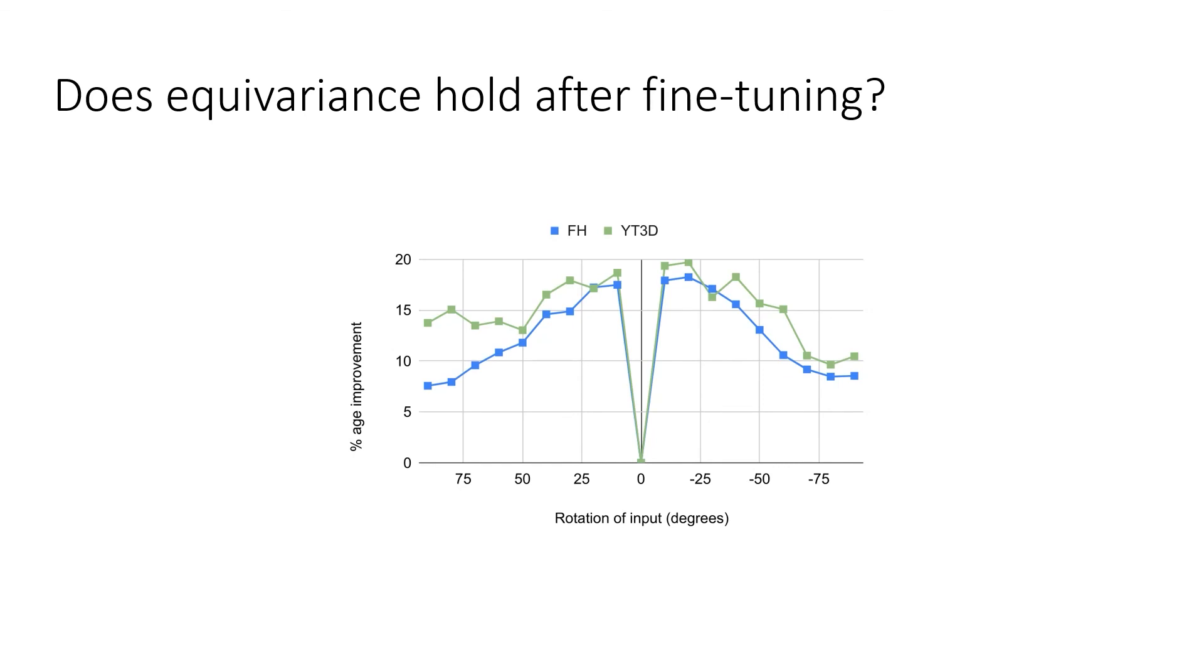This can also be observed quantitatively. Here, the y-axis shows the percentage of improvement in equivariance of PECLR over SimCLR, whereas the x-axis denotes the rotation degrees. We test both for FreiHAND as well as for YouTube 3D Hands. We observe that for both datasets, PECLR leads to a more improved equivariance representation after fine-tuning.